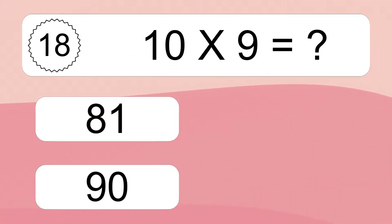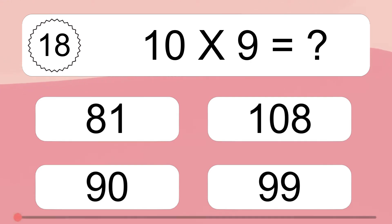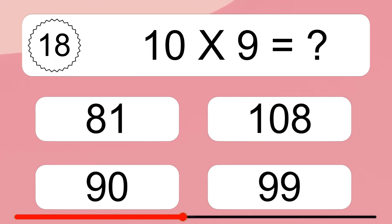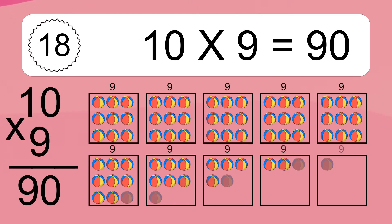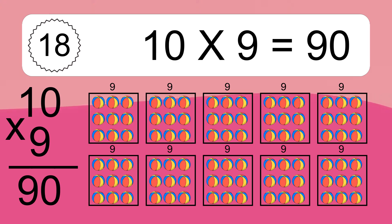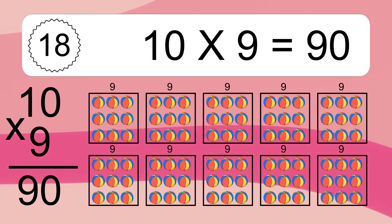10 times 9 equals what? 10 times 9 equals 90. We have 10 boxes and each box has 9 colorful balls inside. If you count all the balls in all the boxes together, you will have 10 times 9 balls. This equals 90 balls.